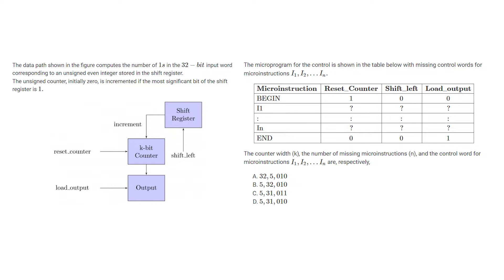The input corresponds to an unsigned even integer stored in the shift register. The unsigned counter, initially zero, is incremented if the most significant bit of the shift register is one. The microprogram for the control is shown in the table below, with missing control words for micro instructions i1 to in.